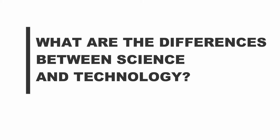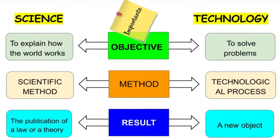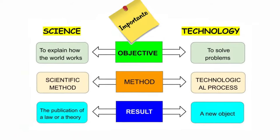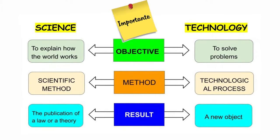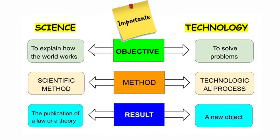What are the differences between science and technology? This table clearly illustrates the differences. As you can see, the objective, the method, and the results are different for science and technology.